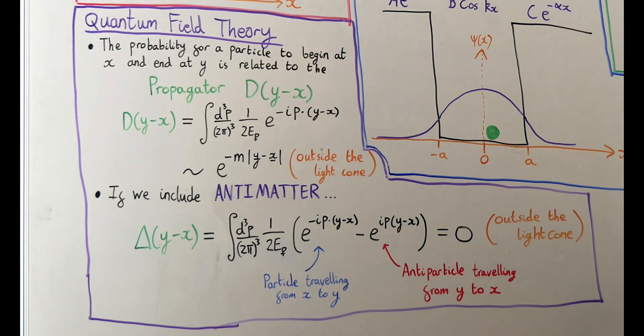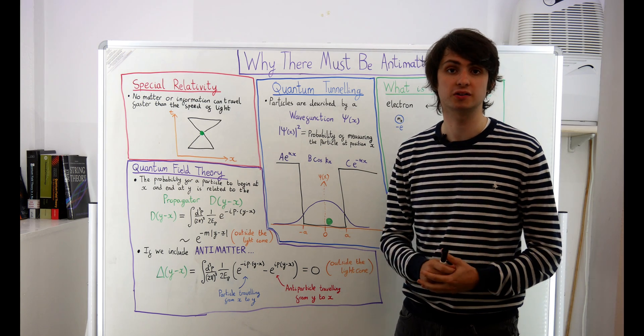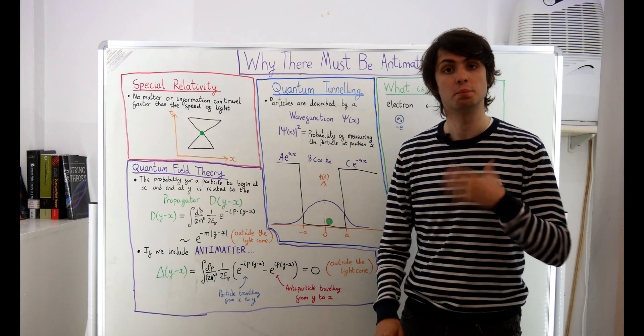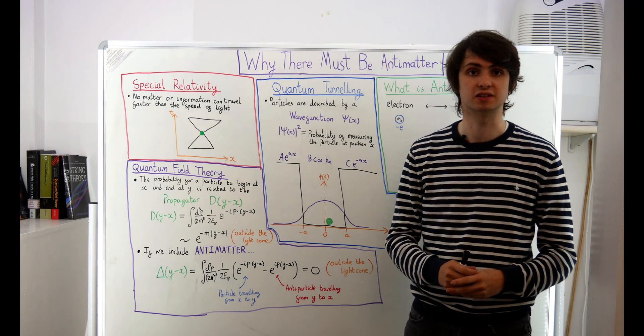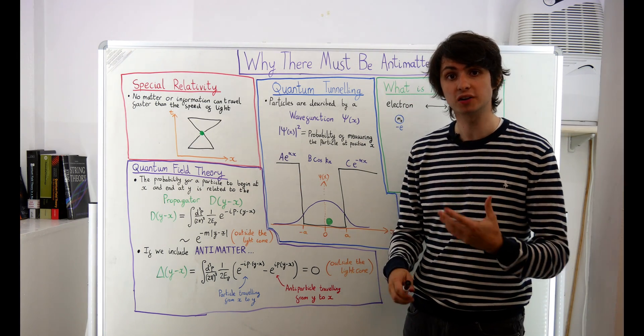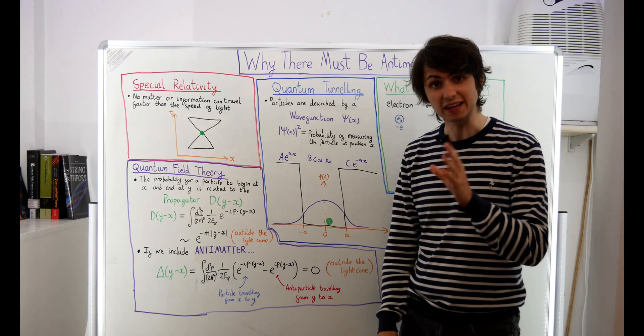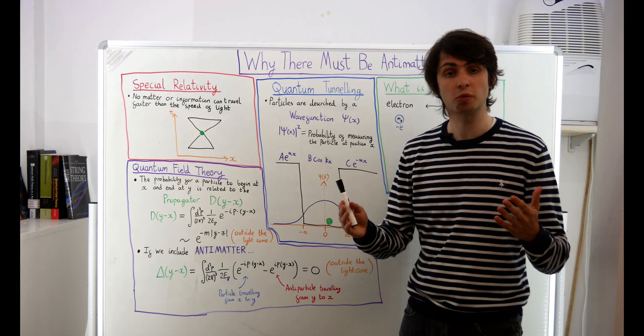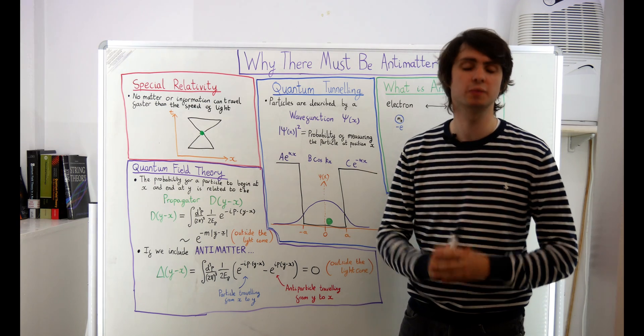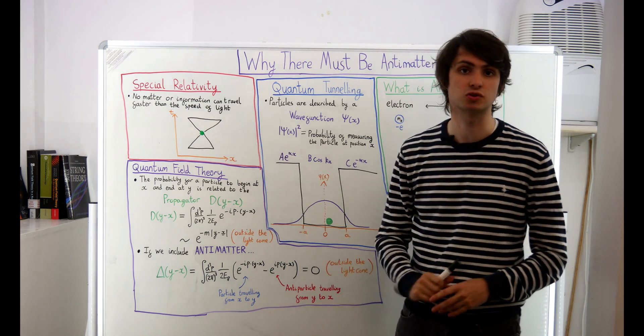But if one of the points happens to be outside the light cone, then these two terms in the expression end up cancelling out perfectly, meaning that there is no chance at all for a particle or an antiparticle to travel faster than the speed of light and be found outside of the light cone. So if we introduce antiparticles into our theory, we preserve both of the lessons that we've learnt from quantum mechanics and special relativity. Quantum mechanics tells us that particles have a small chance of tunnelling outside of their light cone. But since antiparticles have an equal chance of being found outside their light cone, the two probabilities end up cancelling each other out, and so nothing can be found outside of its light cone as special relativity demands.